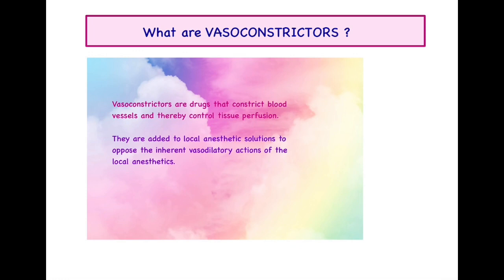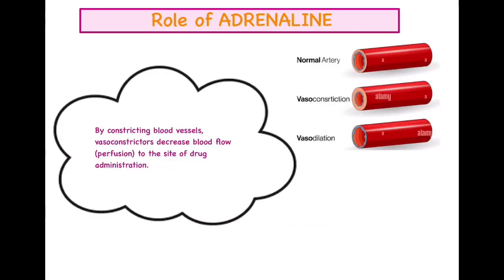Vasoconstrictors are drugs that constrict the blood vessels and thereby control tissue perfusion. As the name indicates, 'vaso' means vessels and 'constrictor' means it is narrowing the lumen of the blood vessel, so that perfusion can be controlled. We do not need hyperperfusion in these cases because that leads to transport of the drug from the required site towards the cardiovascular system, increasing the chances of toxicity. Therefore, vasoconstrictors are added to local anesthetic solutions to oppose the inherent vasodilatory actions of local anesthetics.